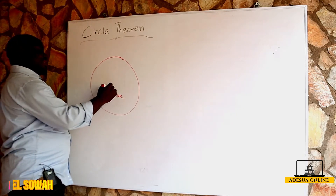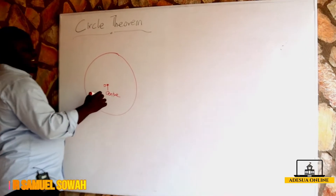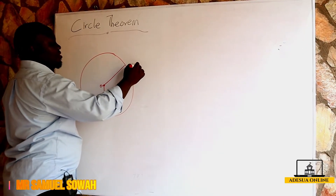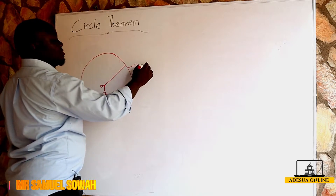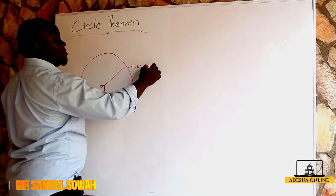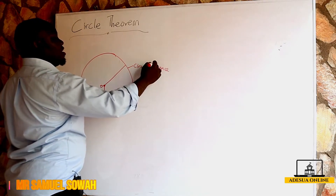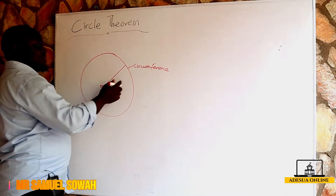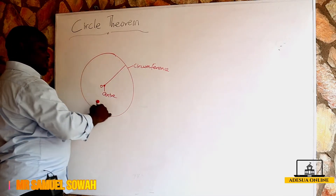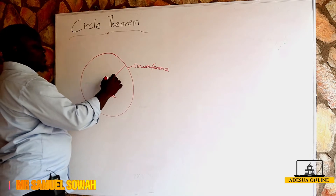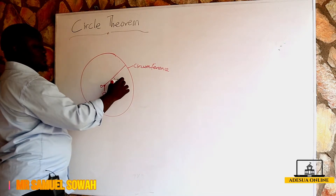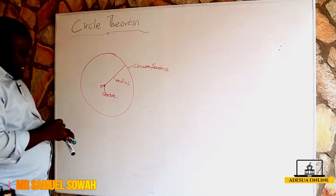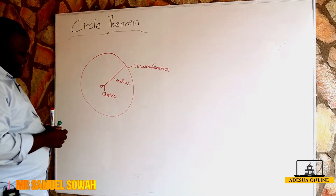Now from the center O of a circle to the circumference of the circle — this is what we call the circumference. And from the center to the circumference of a circle is what we call the radius.